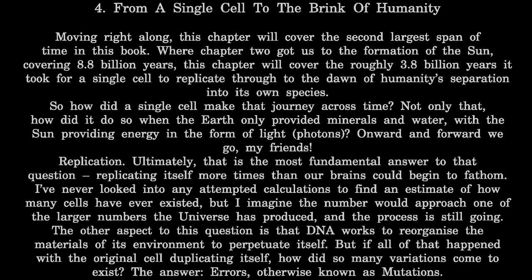I've never looked into any attempted calculations to find an estimate of how many cells have ever existed, but I imagine the number would approach one of the larger numbers the universe has produced, and the process is still going. DNA works to reorganize the materials of its environment to perpetuate itself. But if all of that happened with the original cell duplicating itself, how did so many variations come to exist? The answer: errors, otherwise known as mutations.